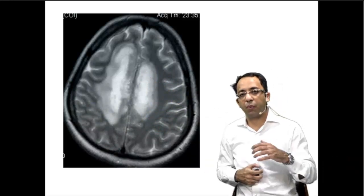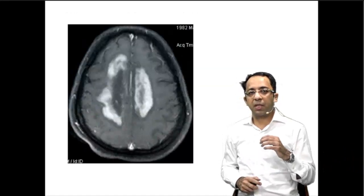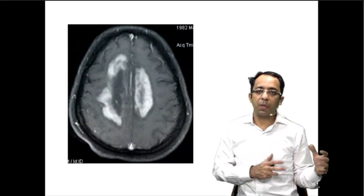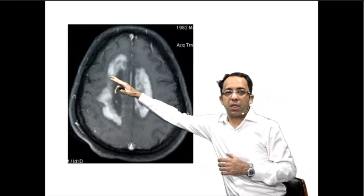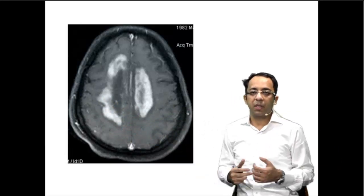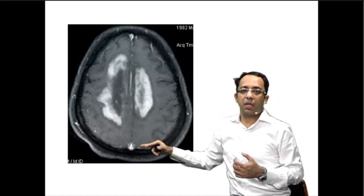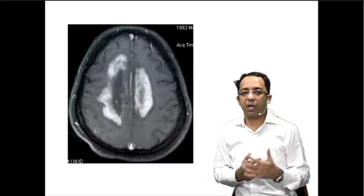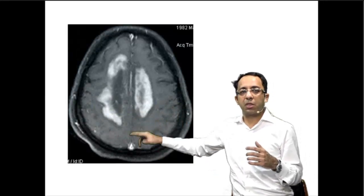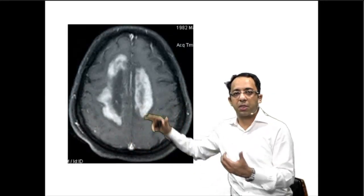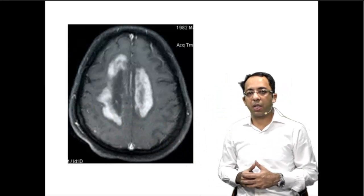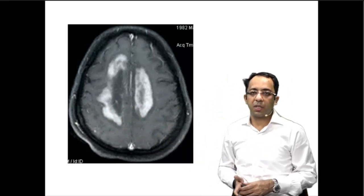When we do a post-gadolinium contrast enhanced image, gadolinium cannot cross the blood-brain barrier. So whenever we see such enhancement, that means this is the area where you have inflammation and blood-brain barrier disruption taking up the dye. Open ring-like enhancement is typically seen in demyelinating illnesses, while ring enhancement has other differentials. Gadolinium leads to T1 shortening, so this is a T1 weighted post-contrast image where the area taking up the dye appears bright.